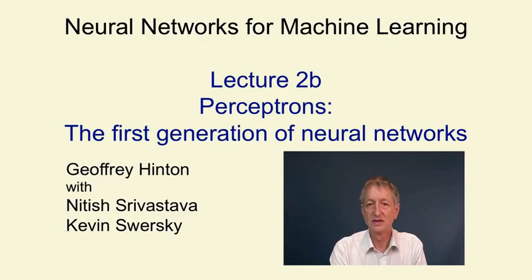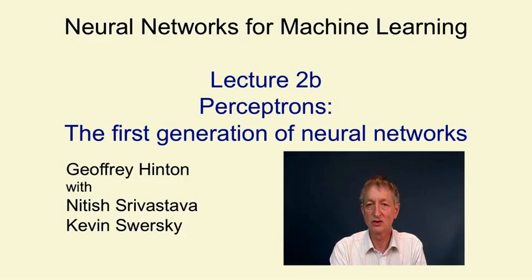In this video, I'm going to talk about perceptrons. These were investigated in the early 1960s and initially they looked very promising as learning devices, but then they fell into disfavour because Minsky and Papert showed they were rather restricted in what they could learn to do.